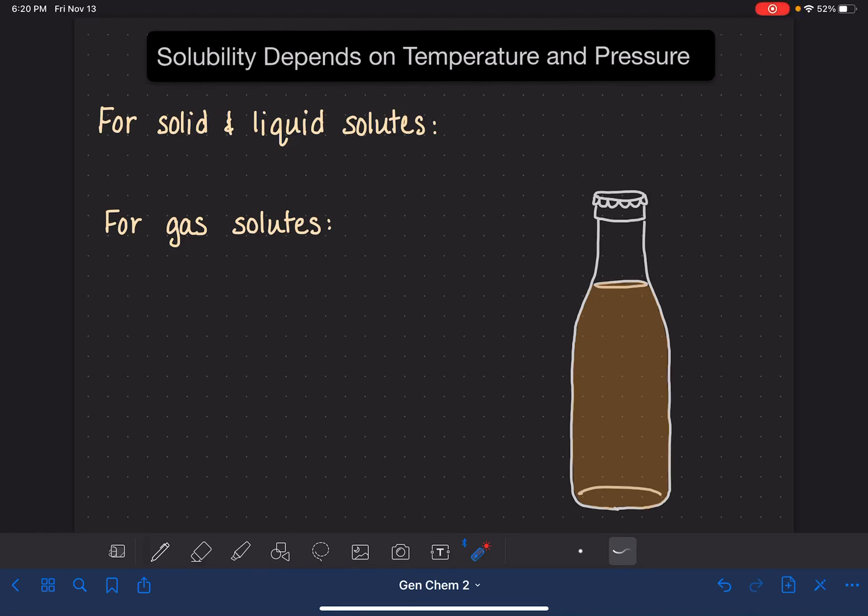The solubility of a solute depends on the temperature of the solution, and sometimes it also depends on the pressure of the gases above the surface of the solution. In this video, we are going to be looking at the relationship between solubility and temperature and pressure for all different types of solutes, starting with solids and liquids.